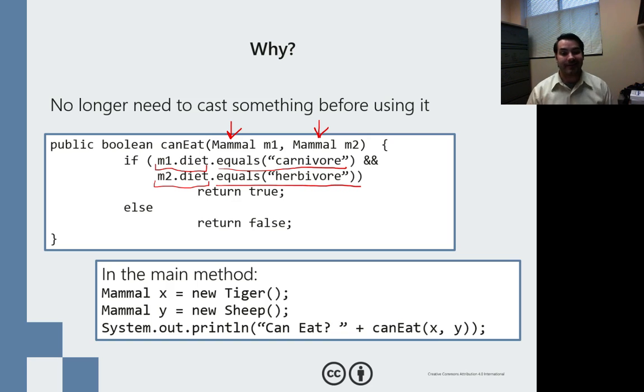Does it equal carnivore and does M2 equal herbivore? If that is the case, we'll just go ahead and say that my carnivore can, in fact, eat my herbivore. You know, if it's an omnivore, no, they fight back, they can bite too. But if my mammal 1 is a carnivore and my mammal 2 is a herbivore, mammal 1 can eat it. And we see that.